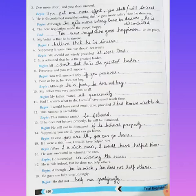Twelfth: This rumor is incredible. Answer: This rumor cannot be believed. Number thirteen: If he does not behave properly, he will be dismissed. Answer: He will not be dismissed if he behaves properly.